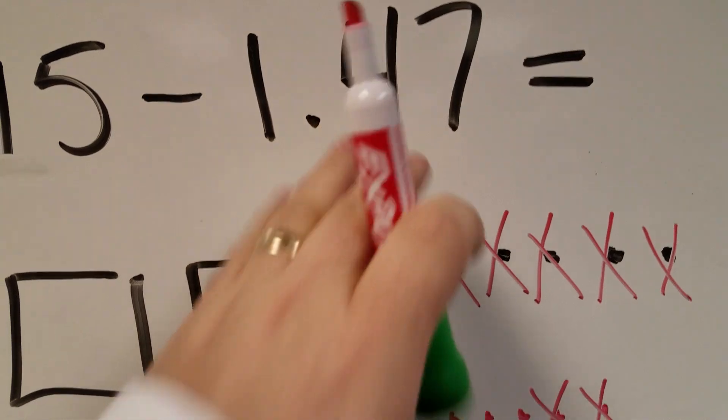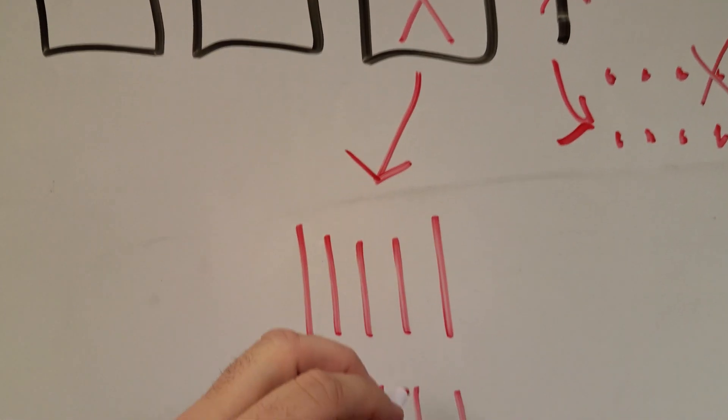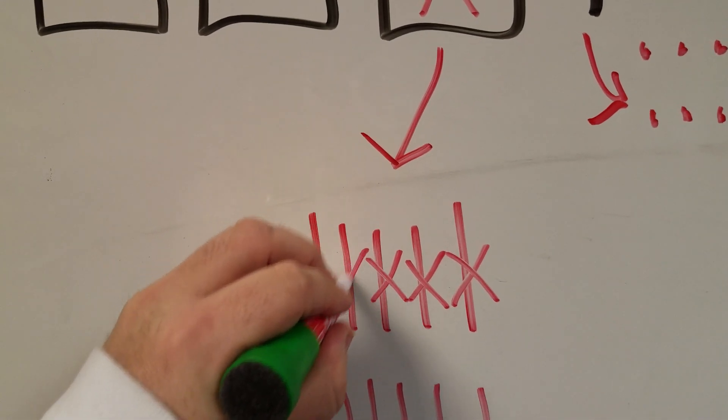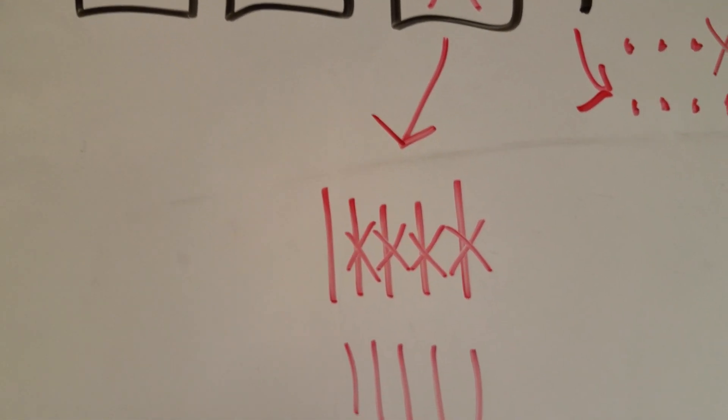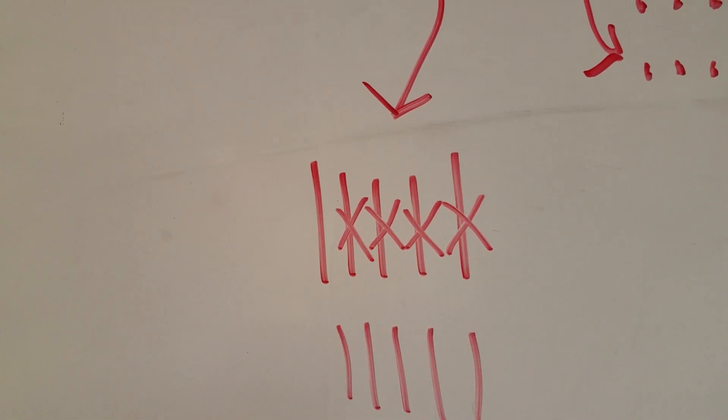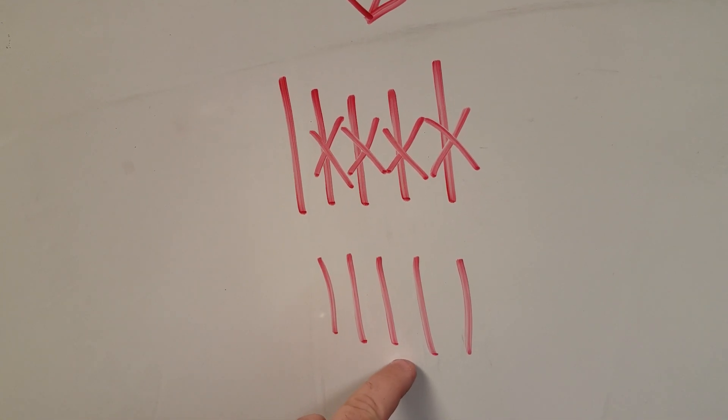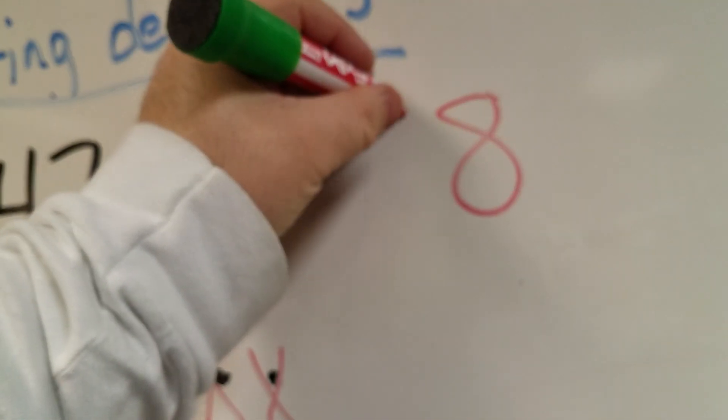Now I'm trying to take four tenths away. So I'm going to go ahead and cross out one, two, three, four. There's my four tenths that I'm taking away. What do I have left? One, two, three, four, five, six tenths. I have six tenths left over.